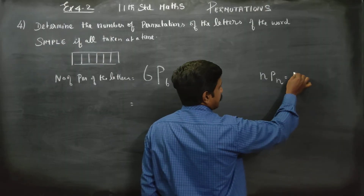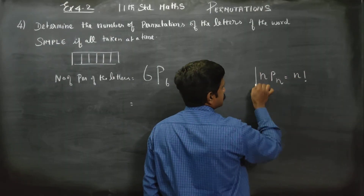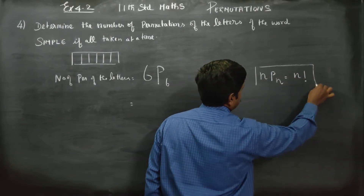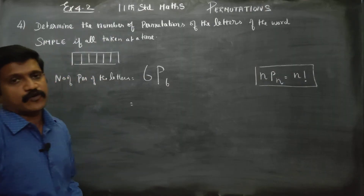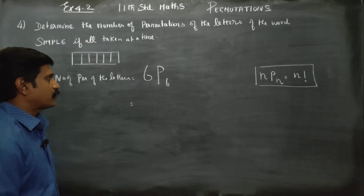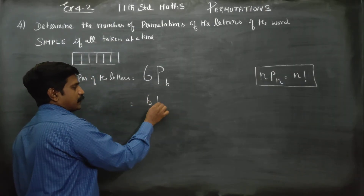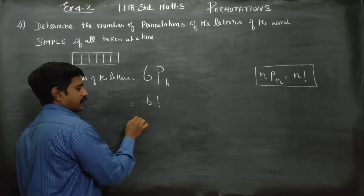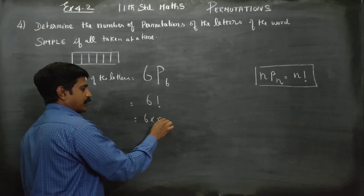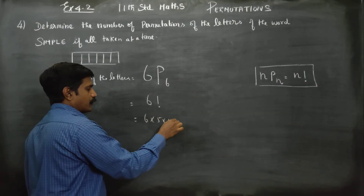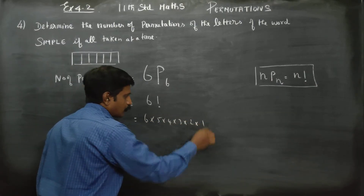When nPn is used, the direct answer is n factorial — that is the direct formula. nPn = n factorial. So 6P6 directly equals 6 factorial, which is 6 × 5 × 4 × 3 × 2 × 1.